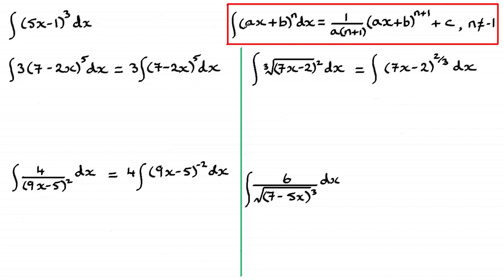Given ax plus b to the power n, the answer is simply to write ax plus b to the power n plus 1 — we add 1 to the power — and also divide by that new power multiplied by a, the coefficient of x. So we divide by a times (n plus 1). And we mustn't forget that constant of integration, plus c.